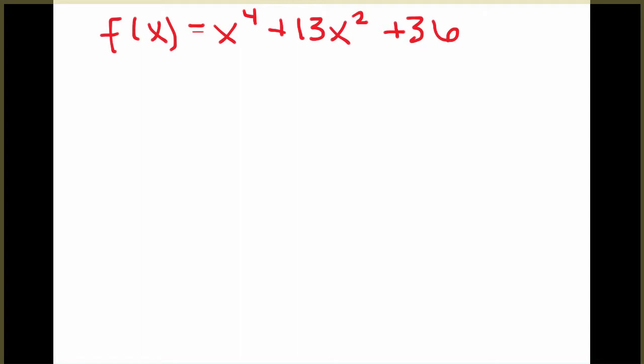So this tells us our conjugates or our complex zeros, imaginary zeros will always come in pairs. So if we know one, we automatically know a second one as well.